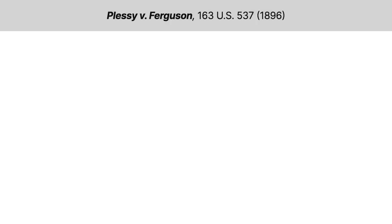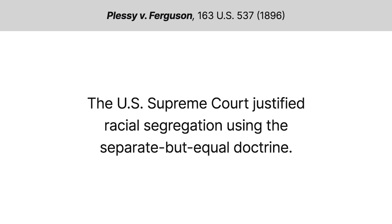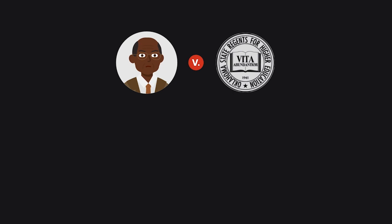In Plessy v. Ferguson, the U.S. Supreme Court justified racial segregation using the separate but equal doctrine. This doctrine was challenged in the 1950 case McLaurin v. Oklahoma State Regents for Higher Education.